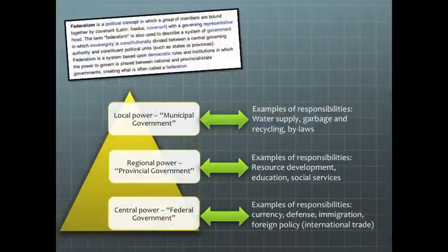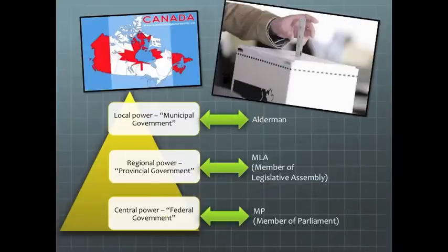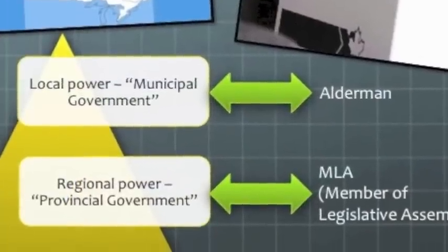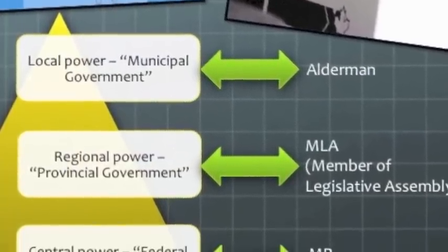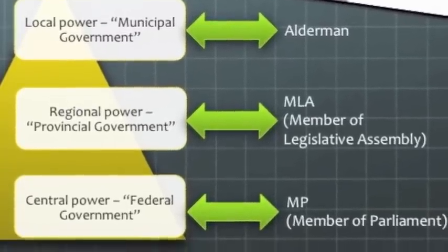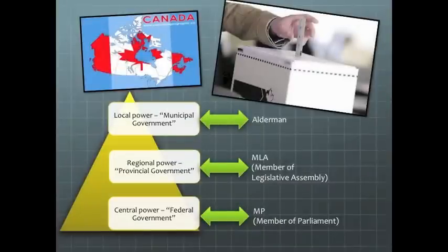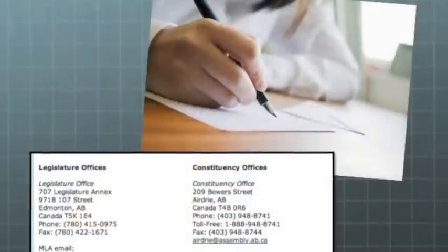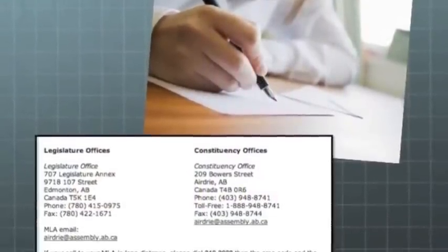Our central government is responsible for things that impact the entire country, like defense and foreign policy through things like international trade. The federal government is required to consider the needs of all Canadians when passing legislation. In Canada's representative democracy, I have a chance to vote in three different elections. I am represented by aldermen locally, an MLA or member of the Legislative Assembly provincially, and an MP or member of parliament for the central government. Each of these representatives have the responsibility to listen to their constituents, and my representatives hear from me when I think something's important.